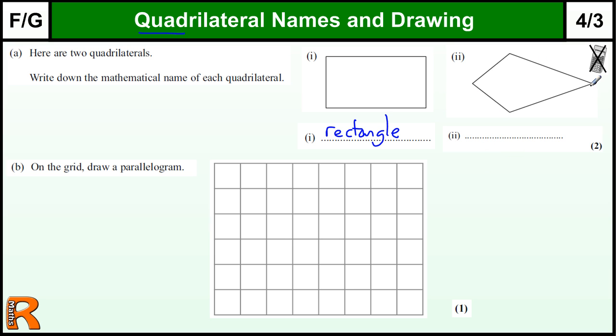This shape here, if I drew a little tassel on here and has some string on it, you'd probably call this a kite, which is its mathematical name. It is a kite.